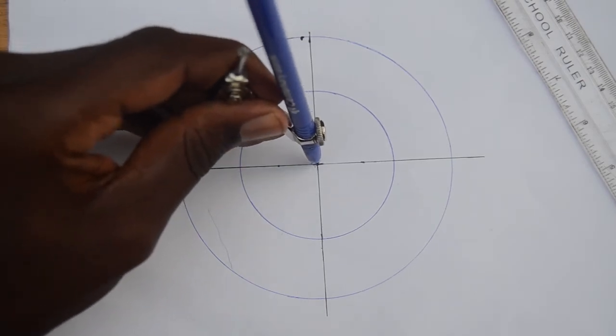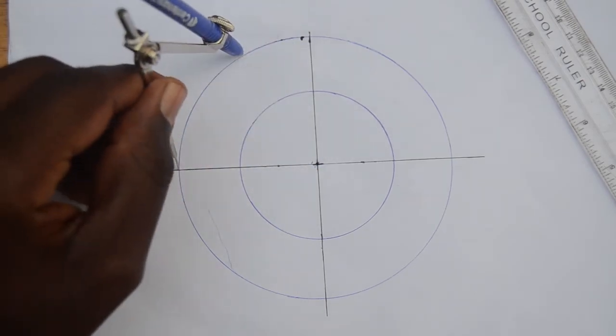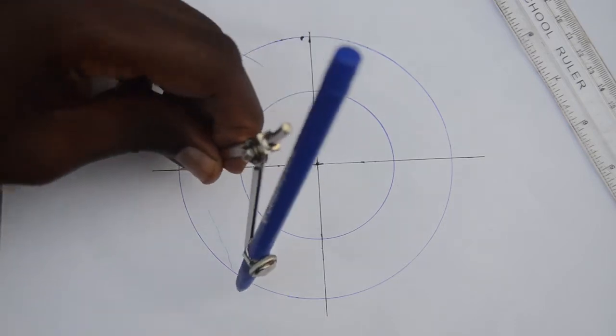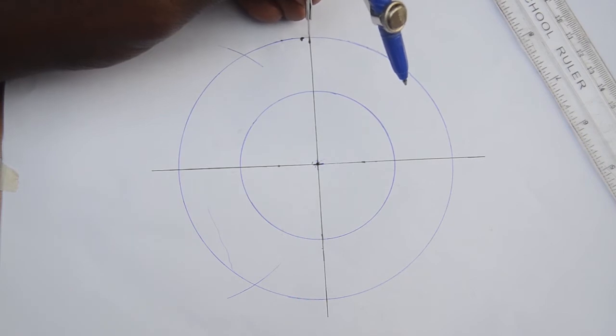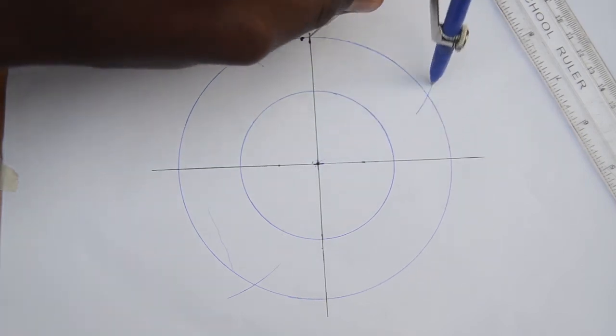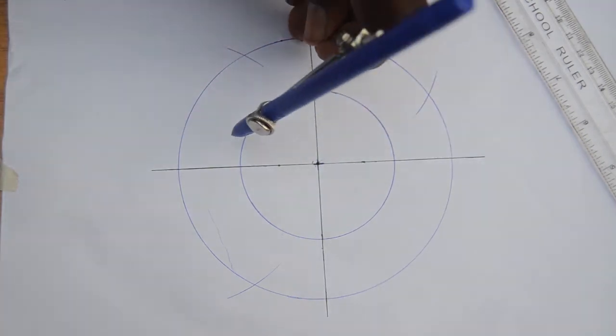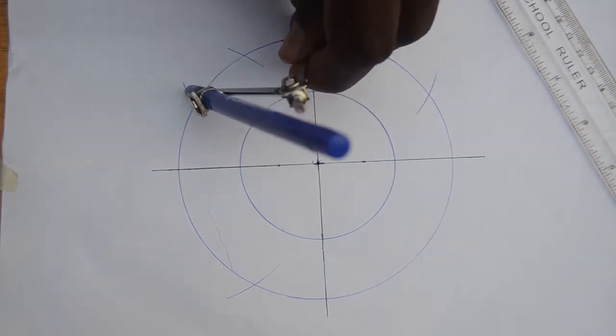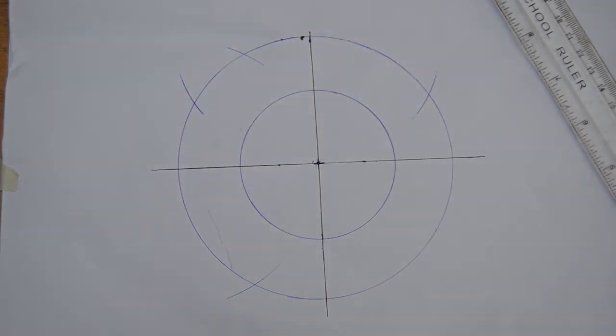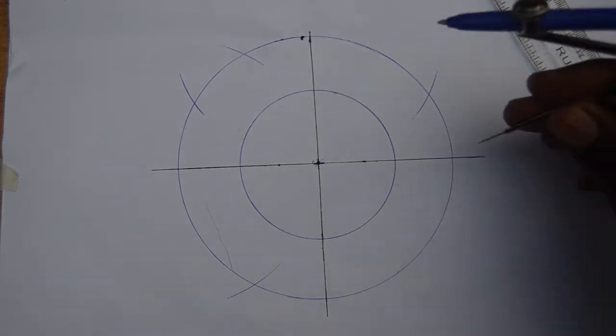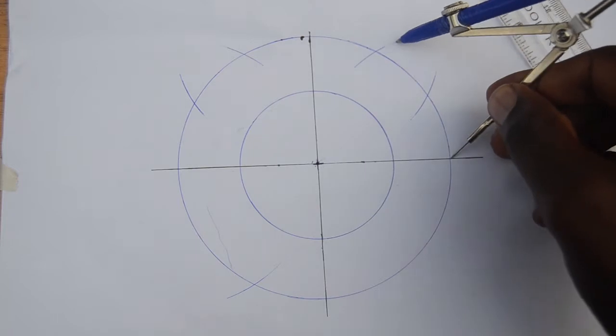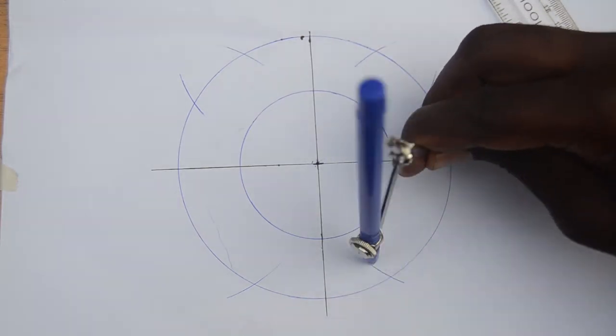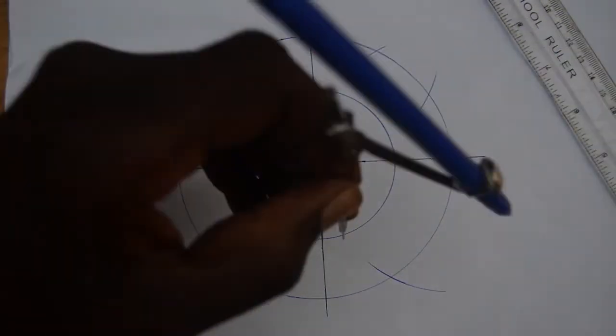Divide your circle into 12 equal parts. This is done by stretching your compass from the axis points to the center and marking off that radius along either side of the circle. You do this for the different four axis points around the circle.